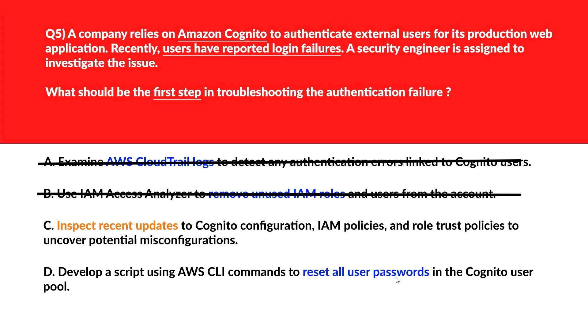Option D involves resetting passwords in the Cognito user pool. Resetting passwords without confirming the root cause may disrupt valid user credentials unnecessarily. Option D is out. Option C is the right answer.